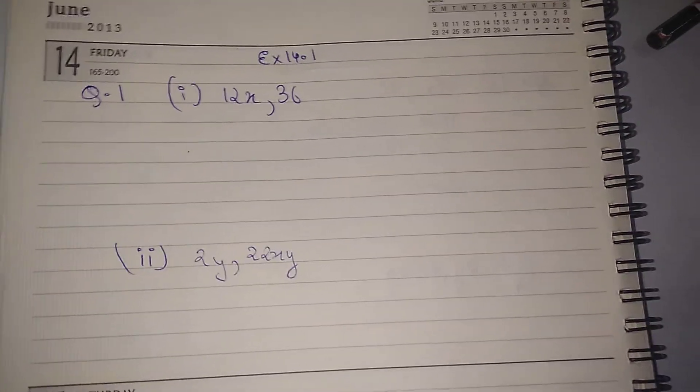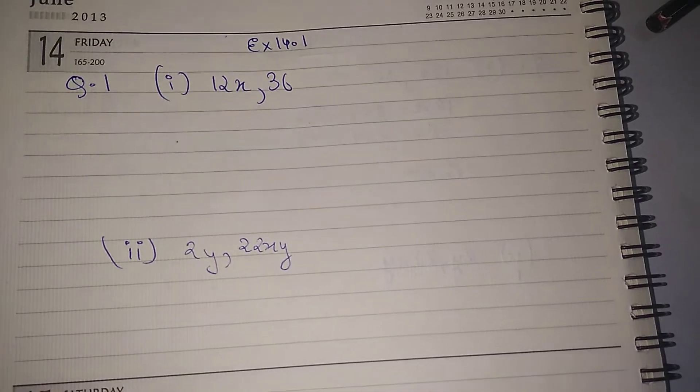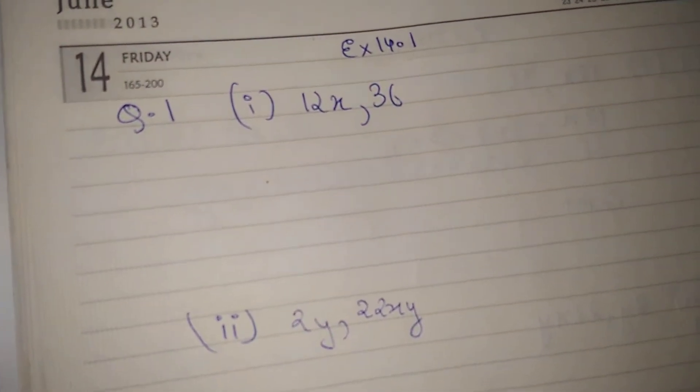Hello everybody, today we are going to do exercise 14.1 of our NCERT Maths book of class A. In this question we have to find the common factors in the given terms.